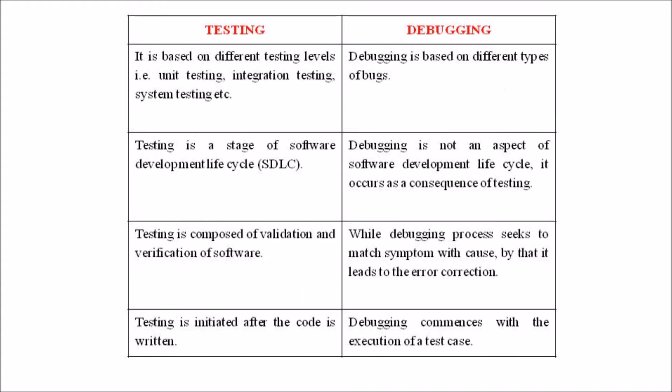Software testing can be manual or automated, while debugging is always manual — debugging cannot be done in an automated way. Software testing is a stage of the software development life cycle, while debugging is not an aspect of the life cycle; it occurs as a consequence of testing.